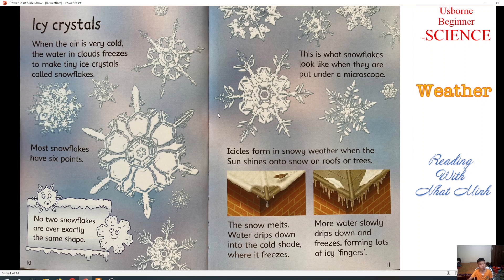Next part we will learn about ice crystals. When the air is very cold, the water in clouds freezes to make tiny ice crystals called snowflakes. Most snowflakes have six points. No two snowflakes are ever exactly the same shape. This is what snowflakes look like when they are put under the microscope.